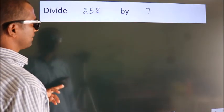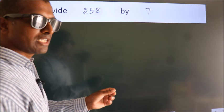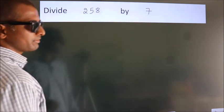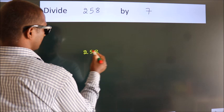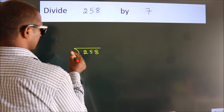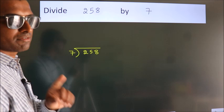Divide 258 by 7. To do this division, we should frame it in this way: 258 here, 7 here. This is your step 1.